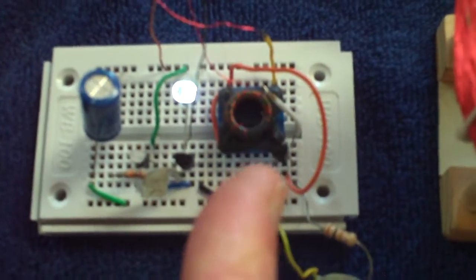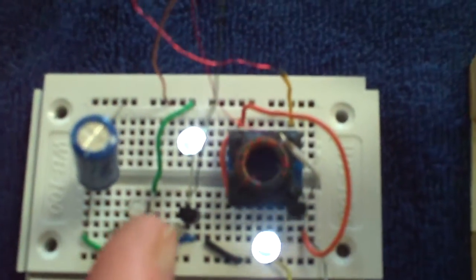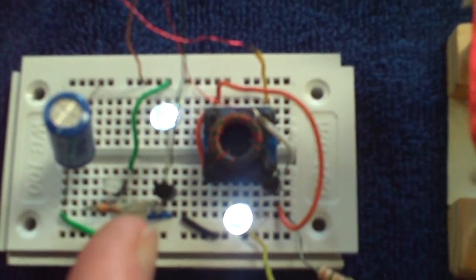And like I say, that's a joule thief circuit on one of the windings. And then the complementary transistor circuit on the other winding.